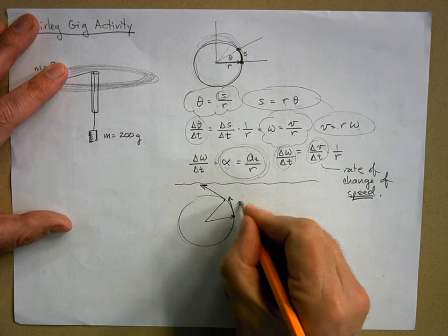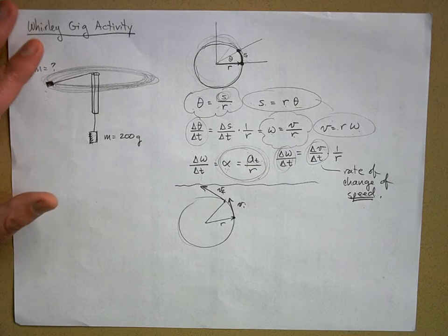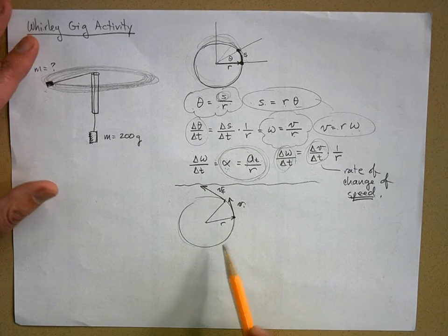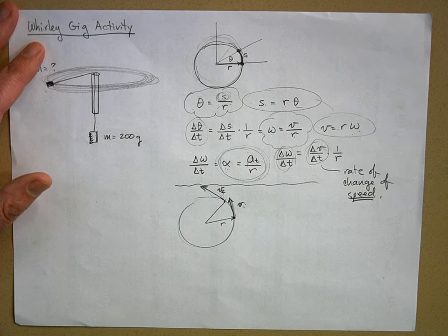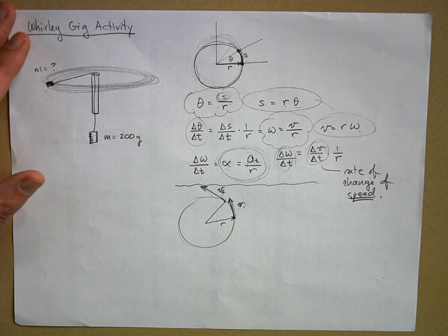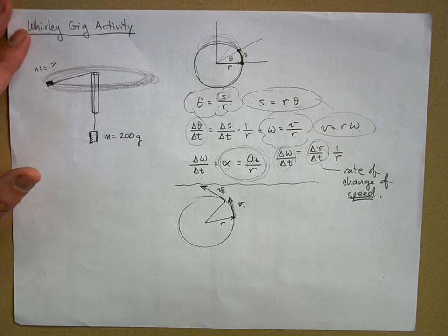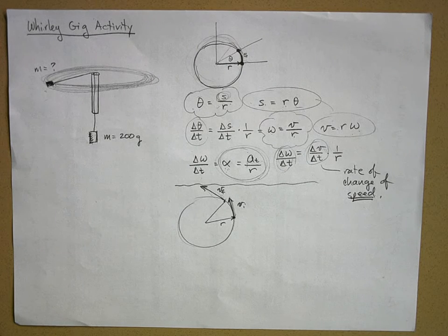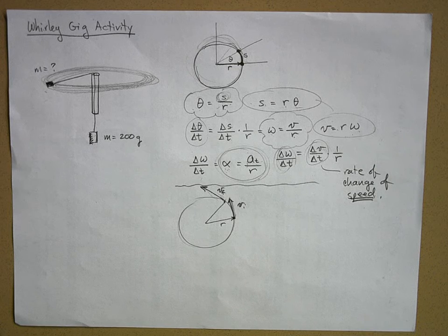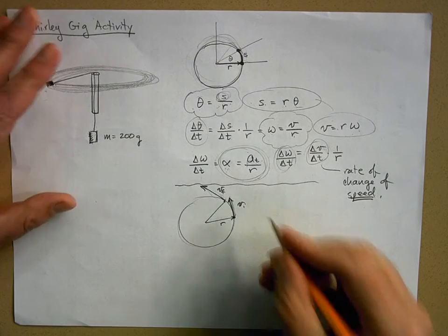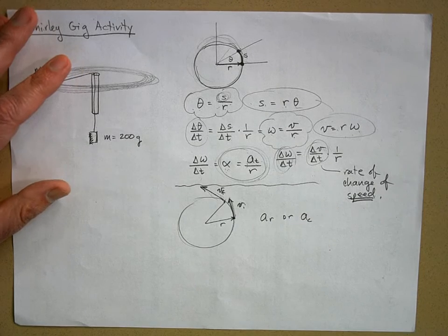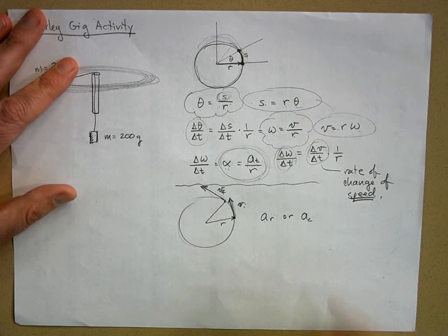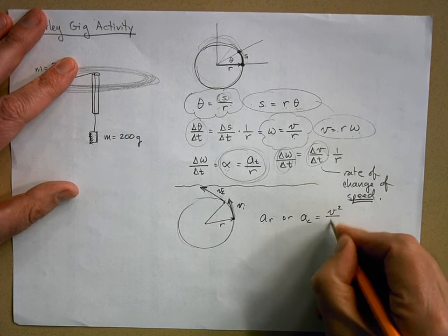If an object moves around a circle, its velocity is always tangential to the path. So v-initial points one way and v-final points another. Even at constant speed, the velocity vector changes direction. To change that direction, you need centripetal acceleration — I won't redo the full derivation, but refer to a previous video or the textbook.